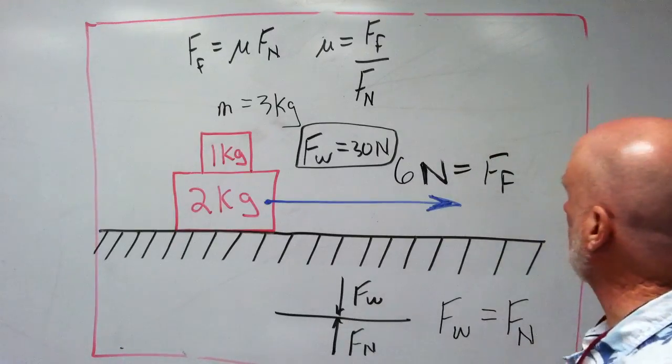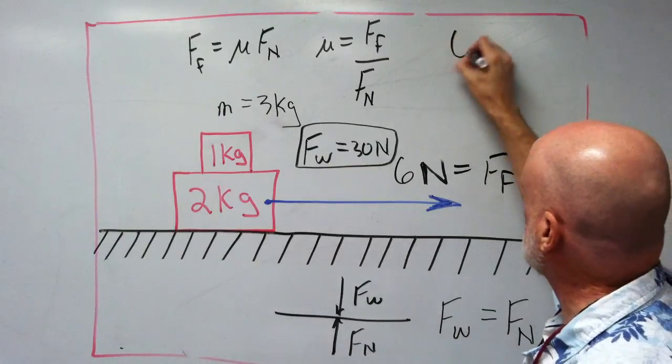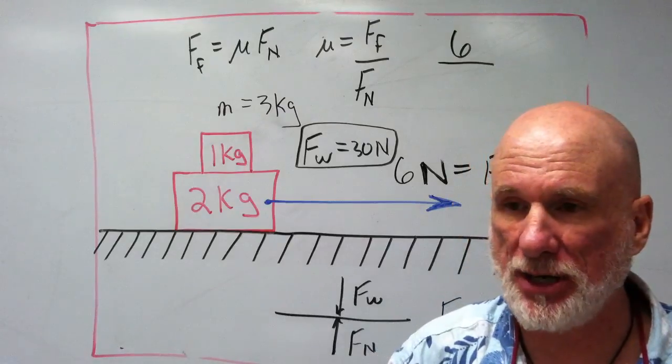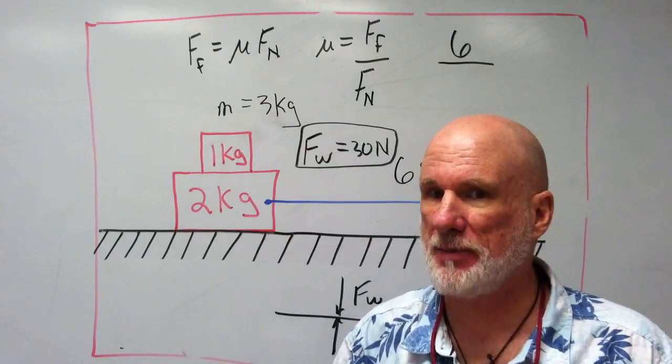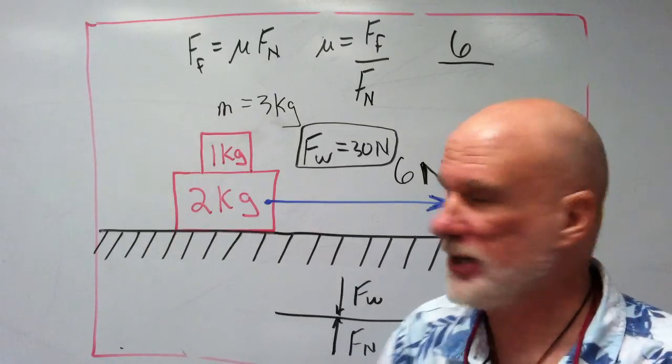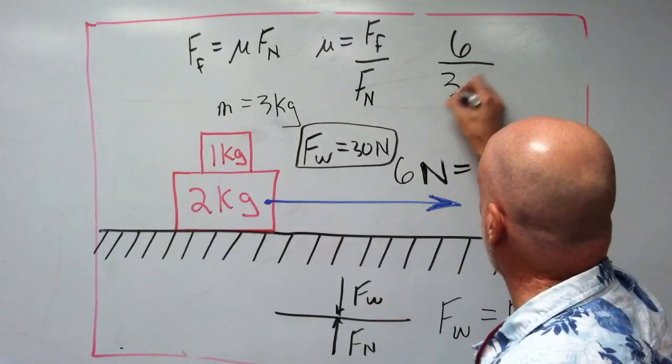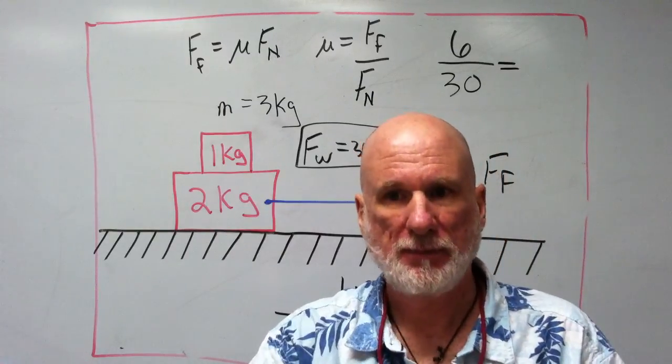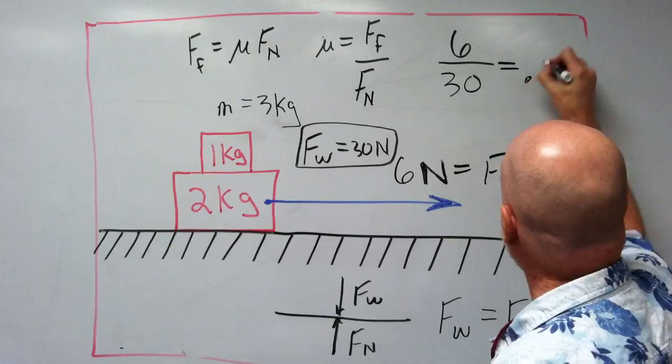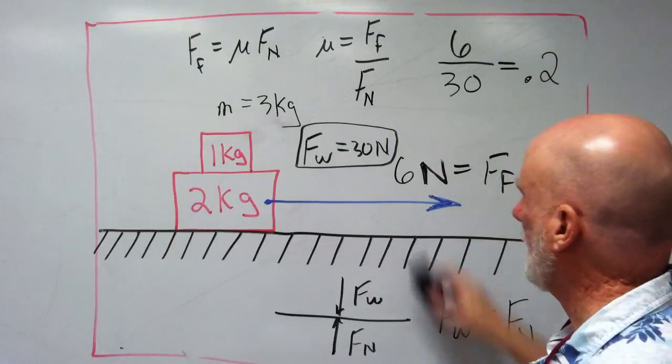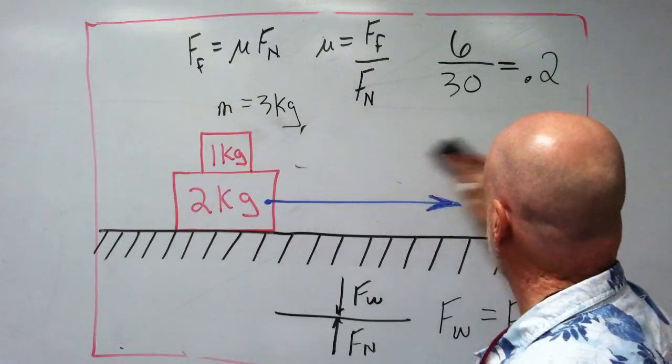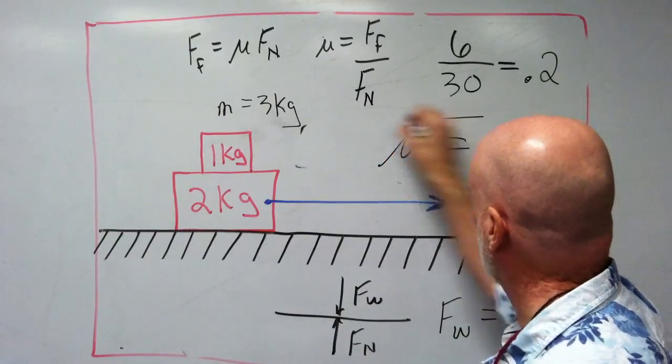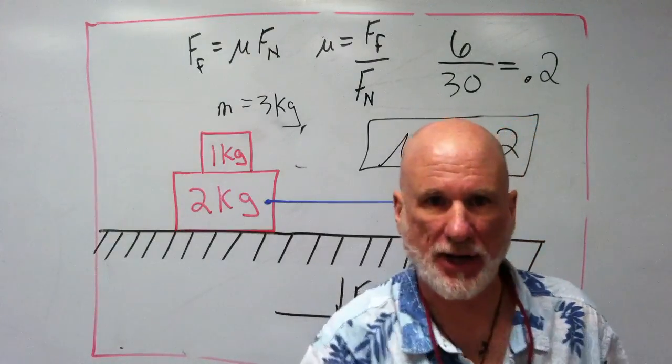So that's going to be six, the friction, over 30. Six over 30 - that's one-fifth. There are five sixes in 30, so that'll be 0.2. The coefficient of friction equals 0.2.